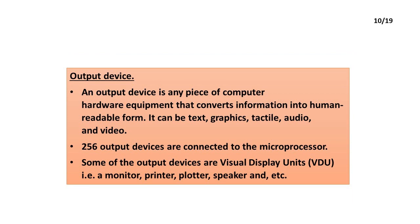An output device is any piece of computer hardware equipment that converts information into human-readable form. It can be text, graphics, tactile, audio, and video. The basic output devices are connected to the microprocessor. Some of the output devices are visual display units, i.e., a monitor, printer, plotter, speaker, etc.